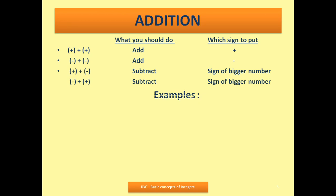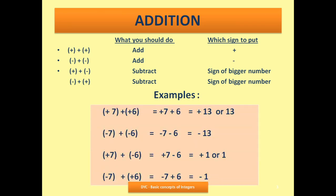Let us understand with examples. 7 is positive, 6 is also positive — no danger at all. Blindly add: 7 and 6 is 13, and I put the sign of positive. Second case, be alert — danger is there. There are two negatives that can create problems. When there are two negatives, you will add, but the sign will be negative. So 7 plus 6 is 13, but the sign is negative.